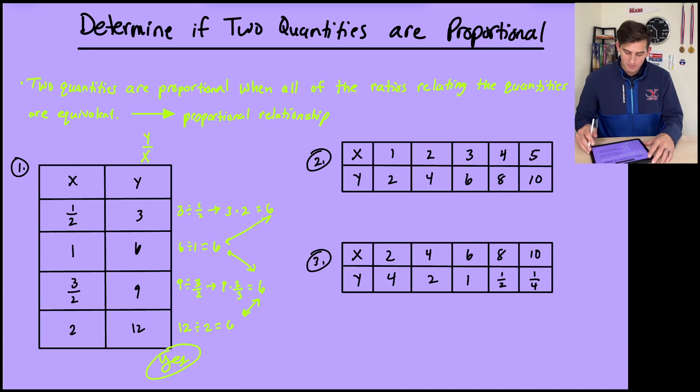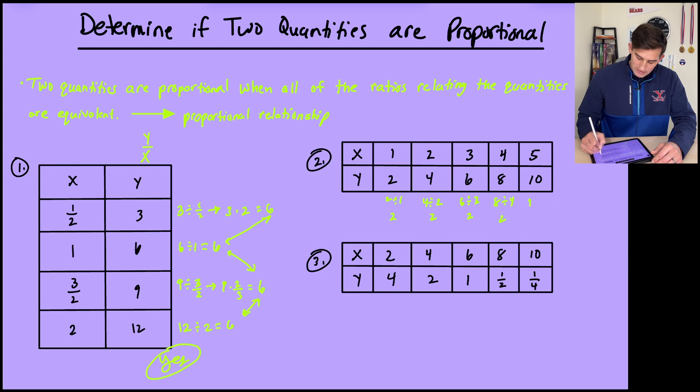All right, let's do the same thing for number two. So this will be a little bit easier because we don't have many fractions that we're working with. So we're going to divide y by x. So this would be 2 divided by 1, which is 2. 4 divided by 2, which is also 2. 6 divided by 3, which is 2. 8 divided by 4, which is 2. And 10 divided by 5, which is 2. So notice here, all of these values, the quotient of y divided by x is all 2.